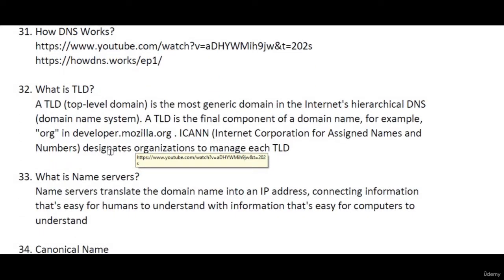What is TLD? A top-level domain is the most generic domain in the internet's hierarchical DNS. A TLD is the final component of a domain name. For example, in google.com, the '.com' is a TLD. In developer.mozilla.org, the '.org' is a TLD. That is what a top-level domain is.